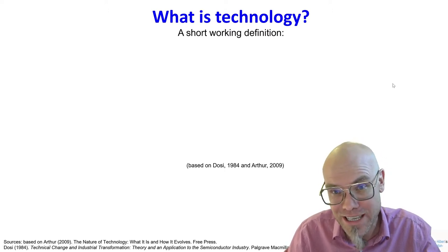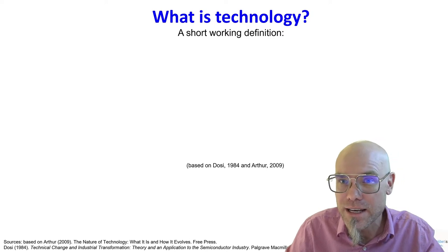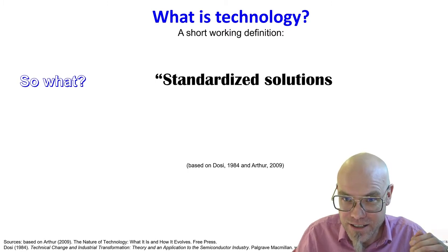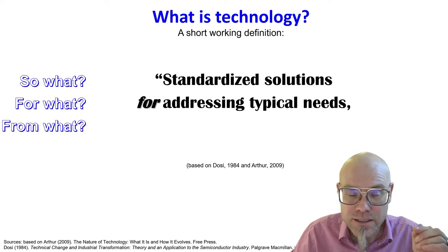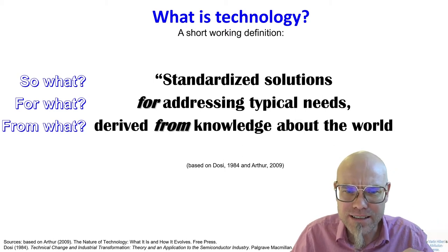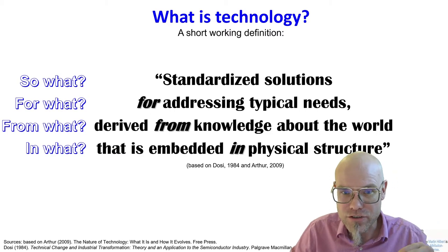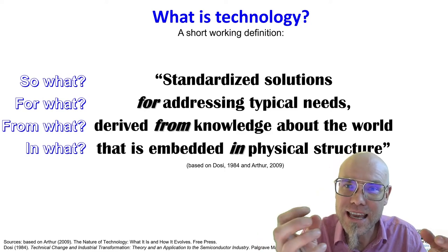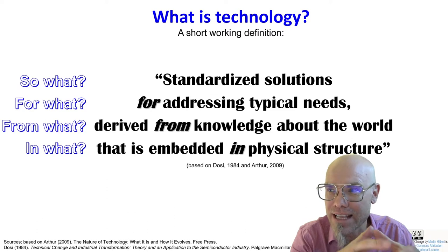I came up with a short working definition — fourfold — based on literature I really like, such as Giovanni Dosi and Brian Arthur. The four points: first, so what is it? Technology are standardized solutions. For what? For addressing typical needs of society. From what? Derived from knowledge about the world — we understand something about reality. And in what? We embed it into physical structures. We understand something about the universe, then embed that into a physical structure to address a typical need, in a standardized way.